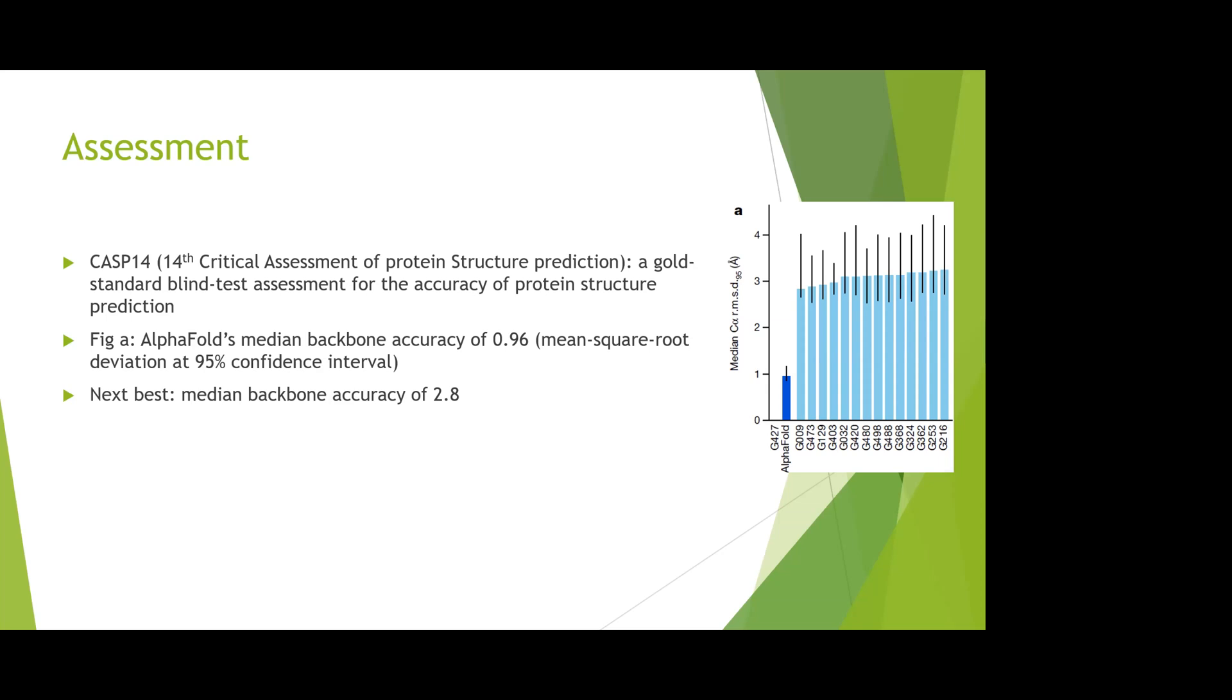On the right, figure A shows the median backbone accuracy. The accuracy of AlphaFold is 0.69 or 0.96. This should be as small as possible—the smaller, the better the model is, since it shows the 95% confidence interval of the result. You can find that the median backbone accuracy of the next best is 2.8.